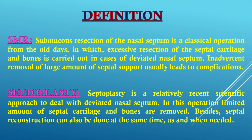By definition, SMR — submucous resection of the nasal septum — is a classical operation from the old days in which excessive resection of the septal cartilage and bones is carried out in cases of deviated nasal septum. Inadvertent removal of large amounts of septal support usually leads to complications. Whereas septoplasty is a relatively recent scientific approach to deal with deviated nasal septum. In this operation, a limited amount of septal cartilage and bones are removed, and septal reconstruction can also be done at the same time, as and when needed.